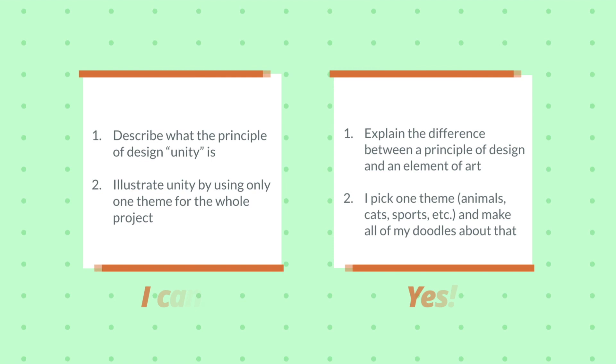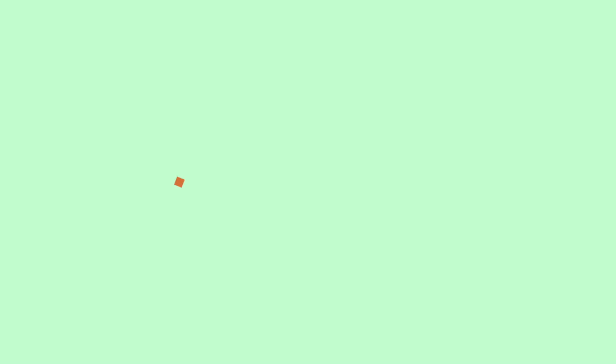Now's a great time to think about what that theme is while we talk about some goals we have for the day. We have two goals today. The first one is to describe what the principle of design unity is and know the difference between a principle of design and an element of art — we talked about that at the beginning of the video, so go ahead and rewind if you're not sure. We're also going to practice unity by creating just one theme for the whole project, so make sure you stick to it the whole time.